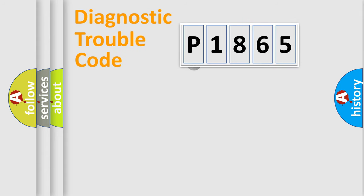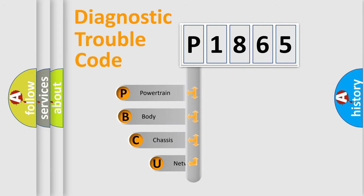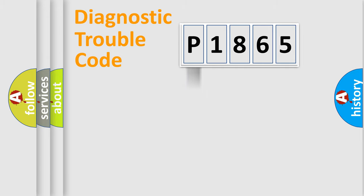Let's look at the history of diagnostic fault code composition according to the OBD2 protocol, which is unified for all automakers since 2000. We divide the electric system of an automobile into four basic units: Powertrain, Body, Chassis, and Network. This distribution is defined in the first character of the code.